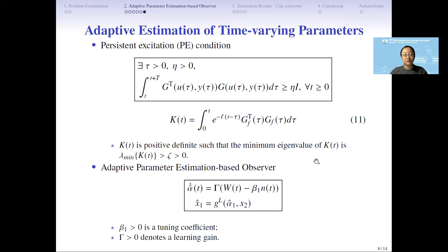As we know, the adaptive parameter estimation requires the system to satisfy the PE condition. Here we propose we could calculate the PE condition through the eigenvalue of K. When the minimum eigenvalue of K is larger than zero, we could say the system satisfies the PE condition.